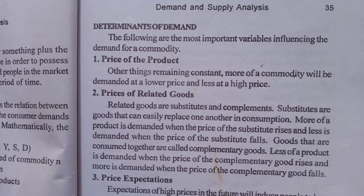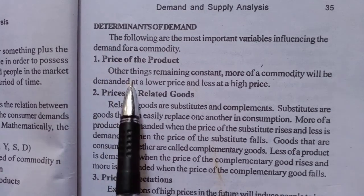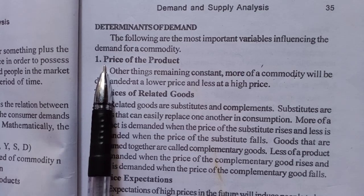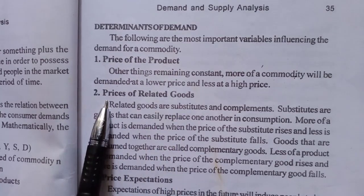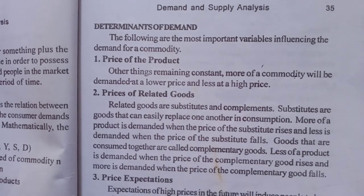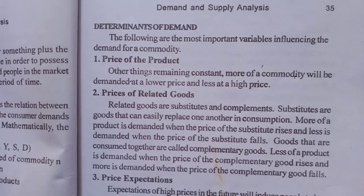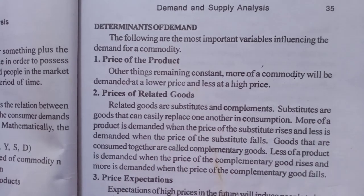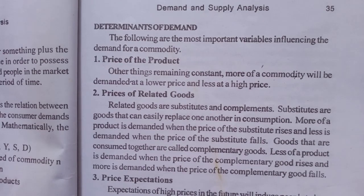Lower price means higher demand, and higher price means less demand — that is the price of the product. The second determinant is prices of related goods. More is demanded when the price of a substitute rises, and less is demanded when the price of the substitute falls. Examples of substitute goods are tea and coffee.